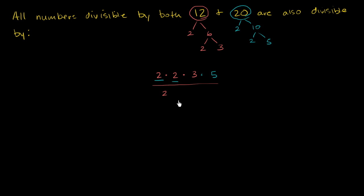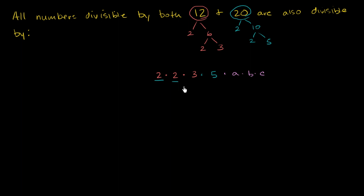This is actually the least common multiple of 12 and 20. Now, this isn't the only number divisible by both 12 and 20 — you could multiply this number by a whole bunch of other factors. But 60 is the smallest such number. Any larger number will also be divisible by the same things as this smaller number. With that said, let's answer the question.